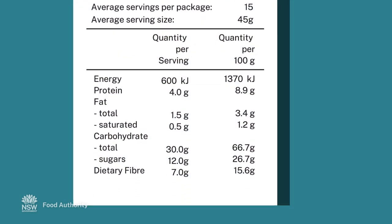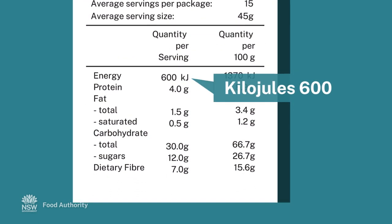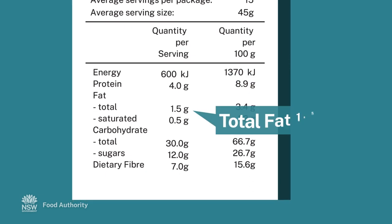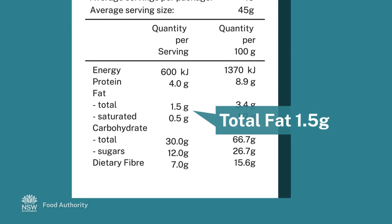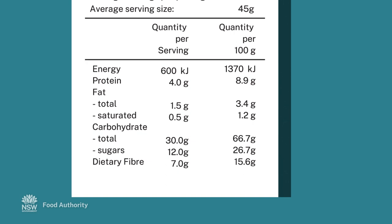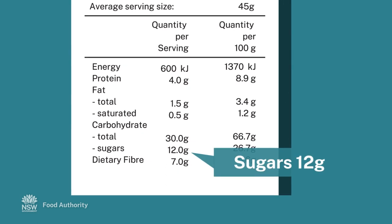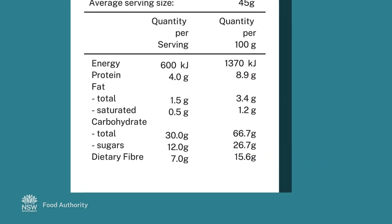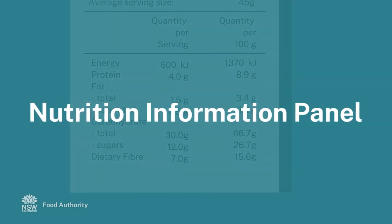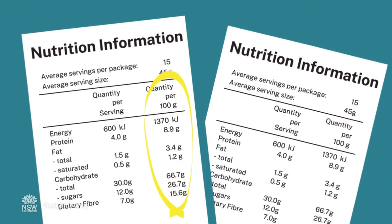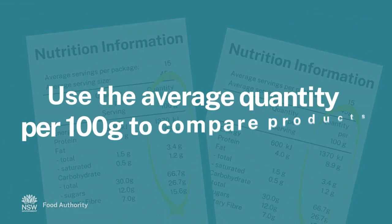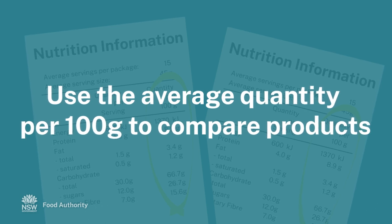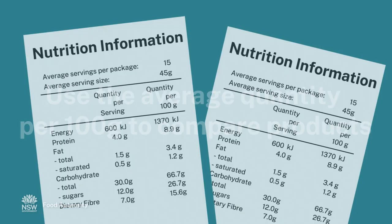Compare products by reading the nutrition information panel. It includes information about kilojoules, fats, carbohydrates and other content. The information is listed in average quantity per serving size and per 100 grams. When comparing products, it's best to use the average quantity per 100 grams, as the serving size can differ from product to product.